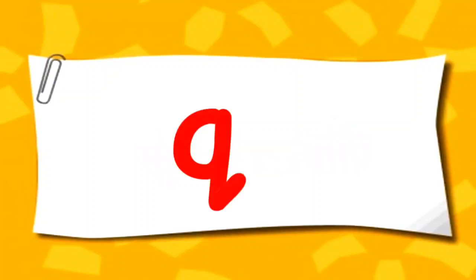Which letter is this? This is Q. Q says QU. But see, Q is sad. Can you guess why? Because Q is not there with its best friend. And who is Q's best friend? Let's see that.